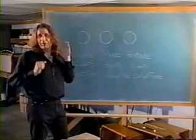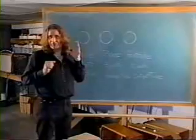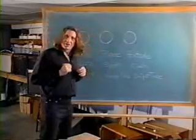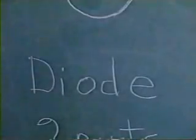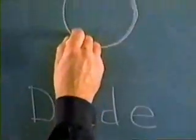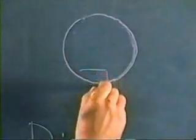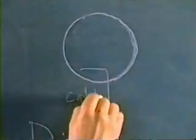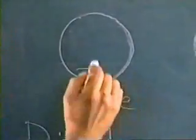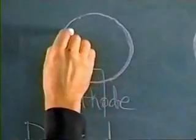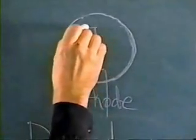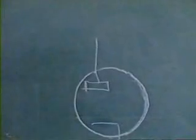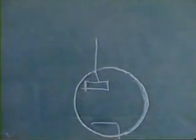You couldn't make an amplifier out of it, but it was a vacuum tube with two components in it, and that's why it's called a diode — it has two components. It has a place for electricity to go in, called a cathode, and it has a place for electricity to come out, which is called a plate.